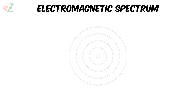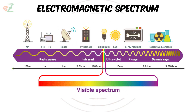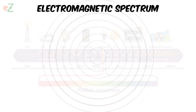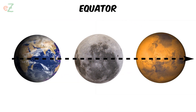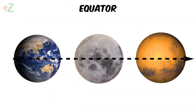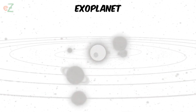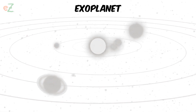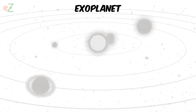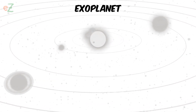Electromagnetic spectrum. The name for all the different kinds of light and energy in the universe. This includes radio waves, microwaves, infrared radiation, visible light, ultraviolet light, x-rays, and gamma rays. Equator. The circle around a planet or moon that is the same distance from its north pole and its south pole. Exoplanet. A planet that freely floats between stars or one that orbits a star outside our solar system.